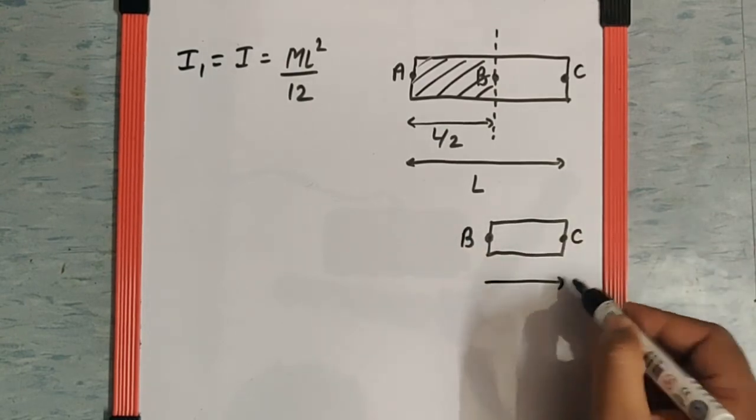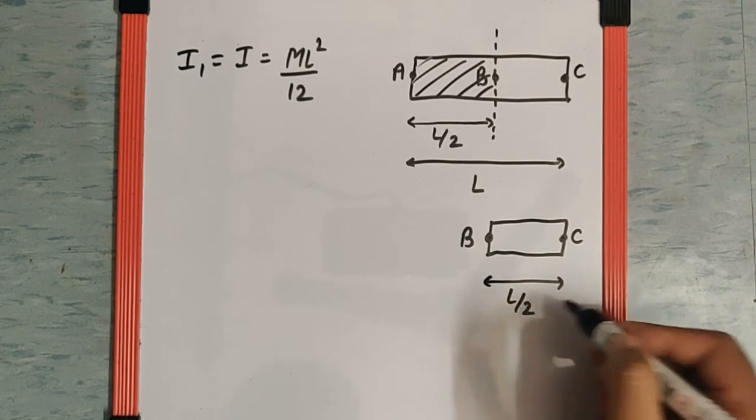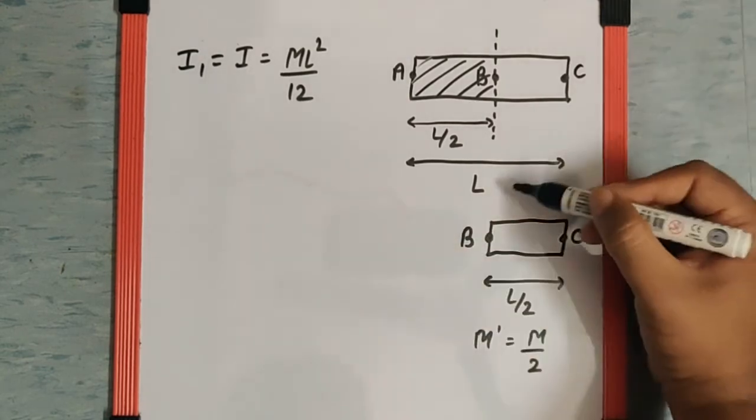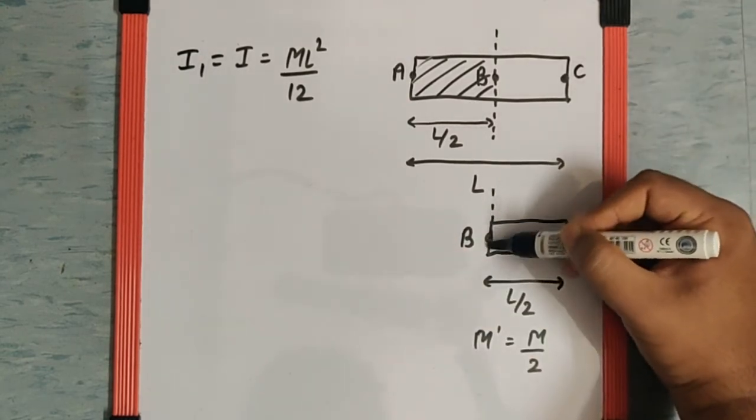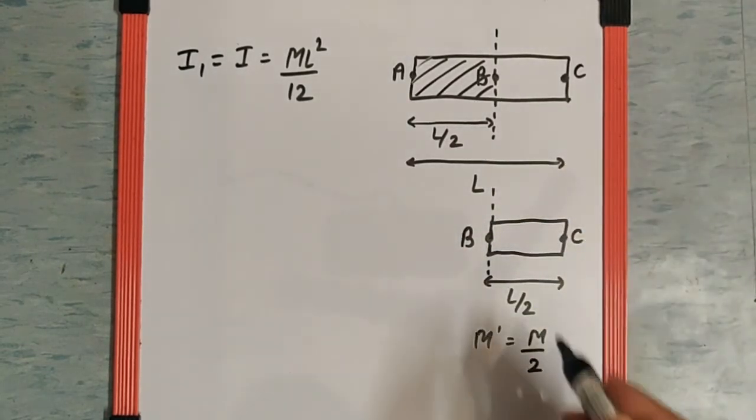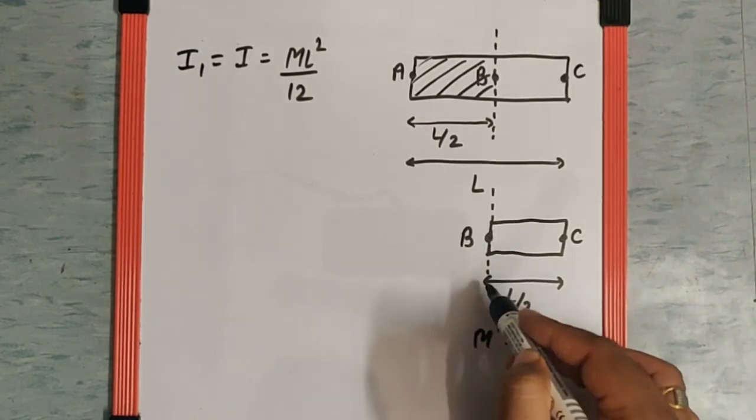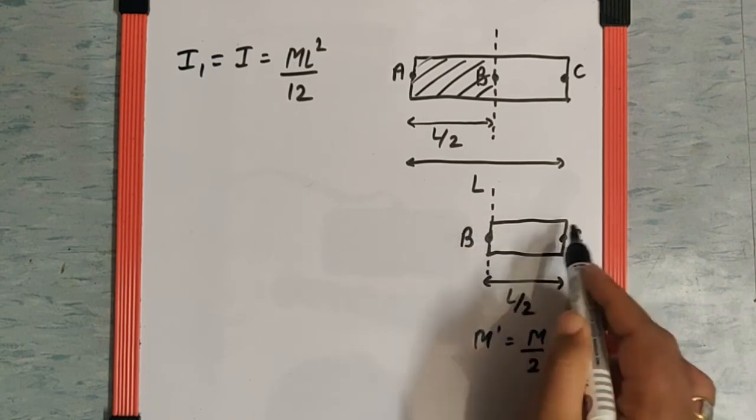For which the length will be L by 2, mass will definitely be M by 2 because half the rod is cut off. The axis is still the same as they have asked us to take, so now this axis is not the one passing through the center of the rod but instead it is passing through one end of the rod.